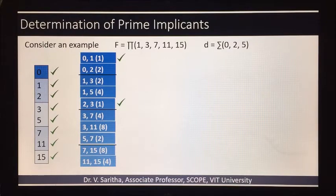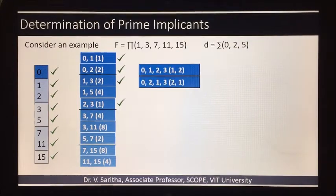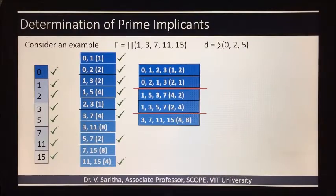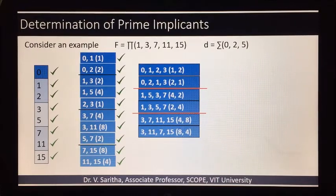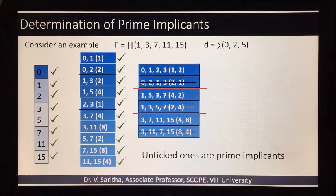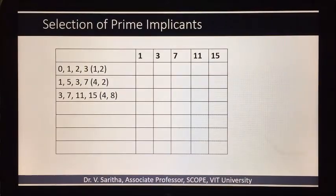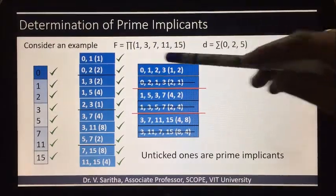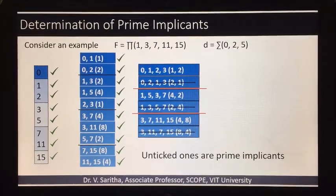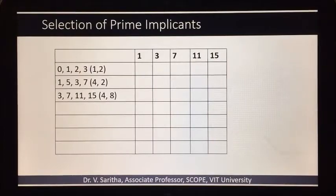We will get 3 quads here, so we will remove the duplicates from the quads obtained, and the unchecked ones are called prime implicants. Then let us go for the second step. If you observe, we are considering the pi terms only; we are not considering the don't care cases in the selection of prime implicants.